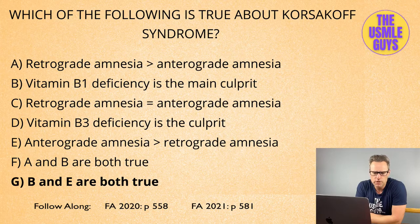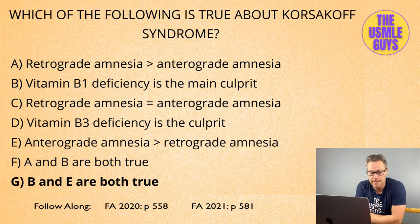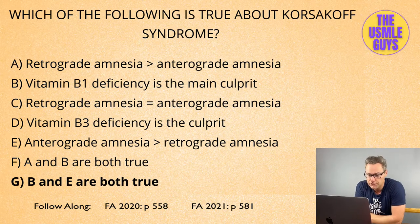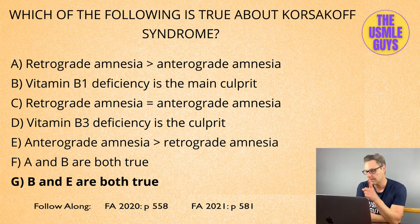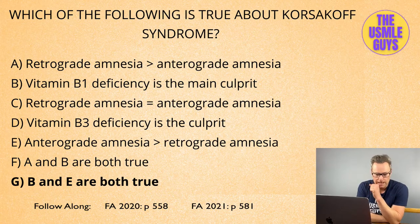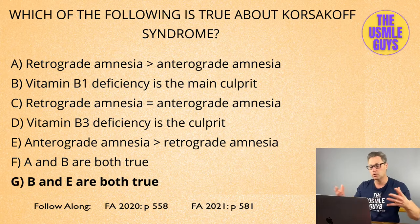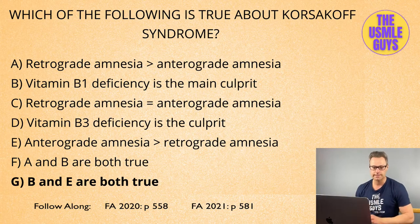Do not forget that dissociative identity disorder is associated with a specific form of abuse — it's sexual abuse. This can also be associated with depression, PTSD, and a specific personality disorder — borderline personality disorder — as well as substance abuse and somatic symptom disorder. One last thing: this is more commonly seen in females, which should help support this as a potential diagnosis on exam day.